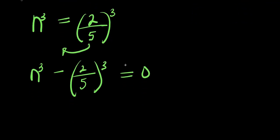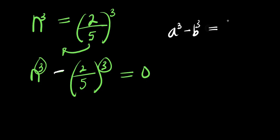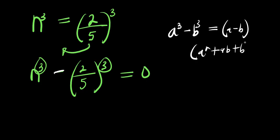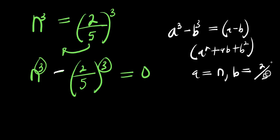Now, at this particular point, there is a power of 3 here and a power of 3 here, and this is minus, so I can easily expand this using the difference of cubes identity: a³ minus b³ equals (a minus b) times (a² plus ab plus b²). In this case, a equals n and b equals 2/5.